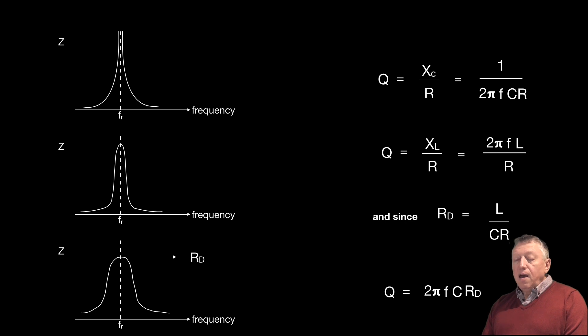So, if they gave you, for example, a tuned circuit, and they said what the dynamic resistance was, and asked you to calculate what the Q factor was, you'd be able to do it using that equation, the equation there at the bottom.